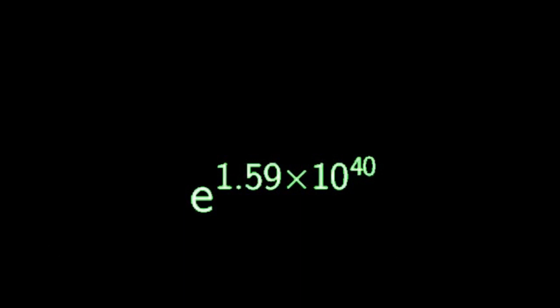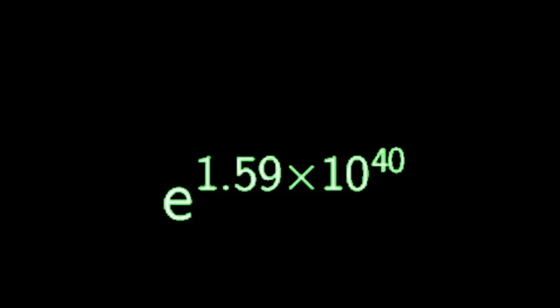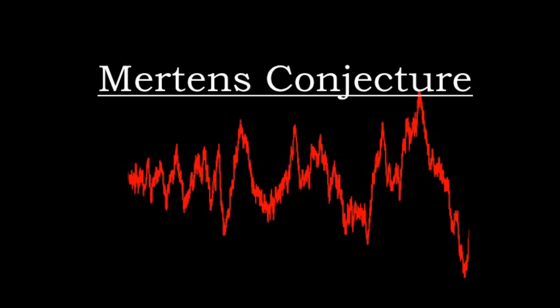One of my favorite numbers in mathematics is a very large counterexample to a famous conjecture about prime numbers. The conjecture is Mertens conjecture and is related to the Riemann hypothesis. It starts with a simple question.